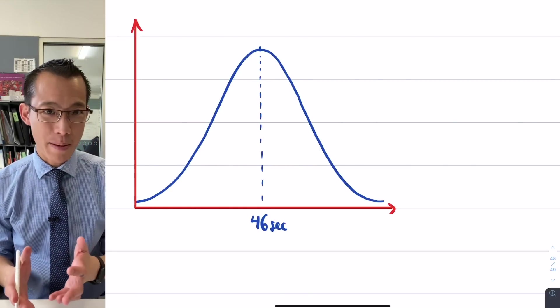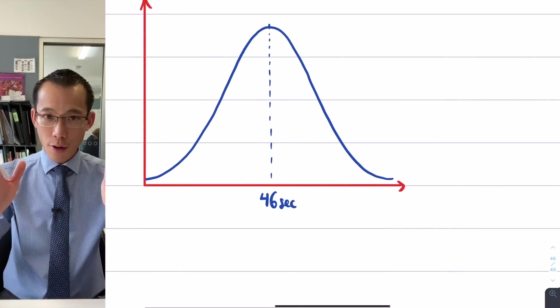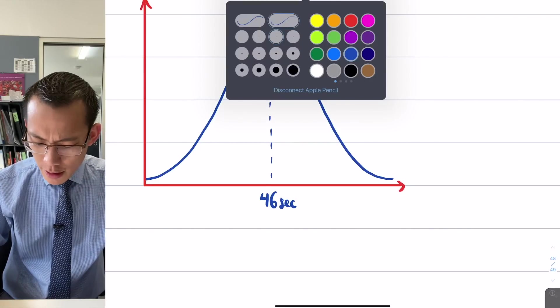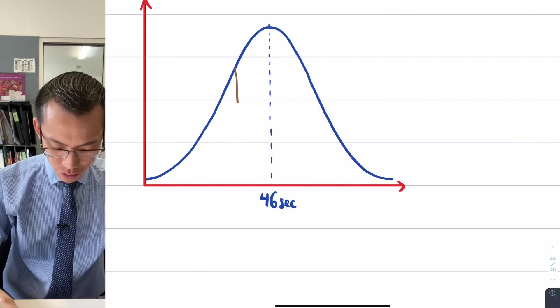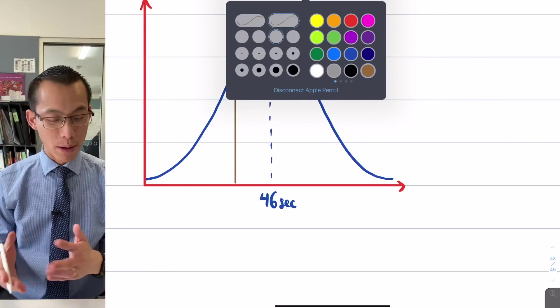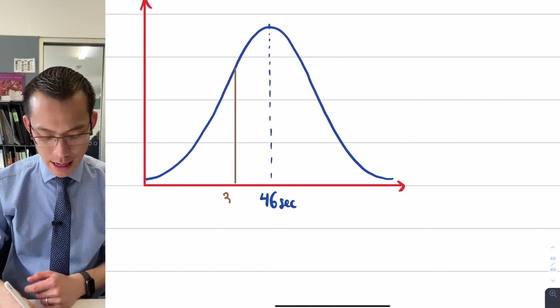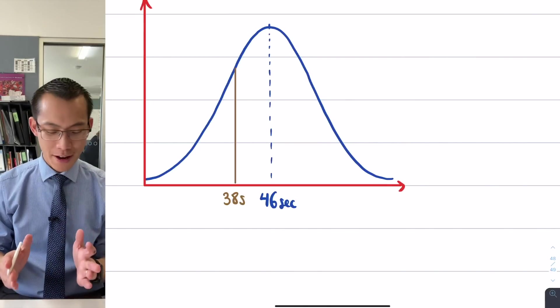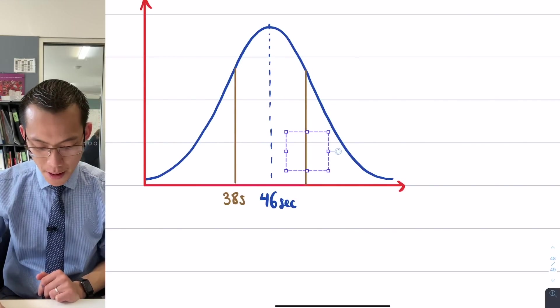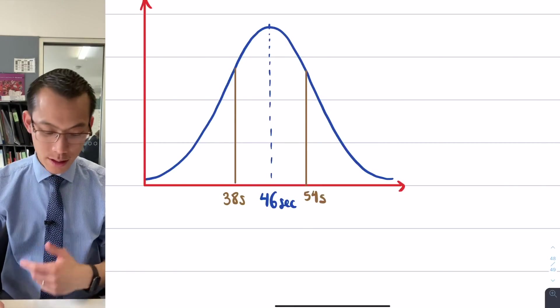Then they start telling us things about the standard deviation. I've got a standard deviation of 8 seconds, which means as I go further and further out, this gives me z-scores. If I go one z-score below the standard deviation, that's 8 seconds, so that would land me at 38 seconds. If I went one standard deviation above, that would be 46 plus 8, which is 54 seconds. So just as an example, between these two brown bars, that would be 68 percent of the population.